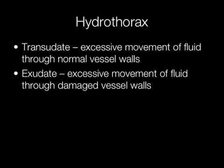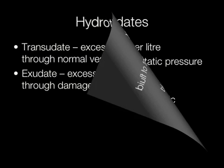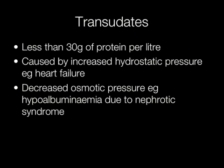A transudate is excessive movement of fluid through normal vessel walls. An exudate is excessive movement of fluid through damaged vessel walls. Transudates are characterised by fluids containing less than 30g of protein per litre.